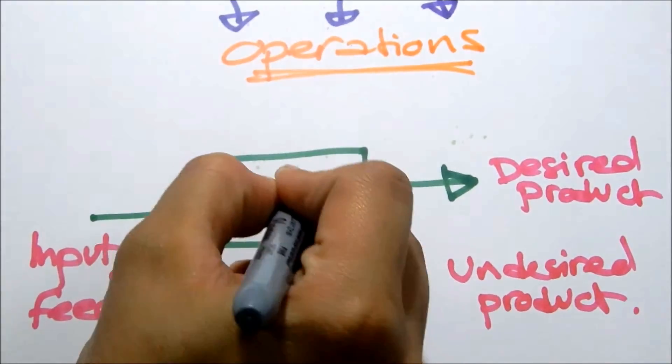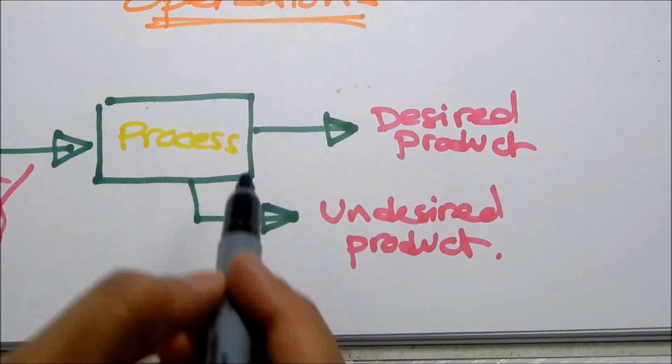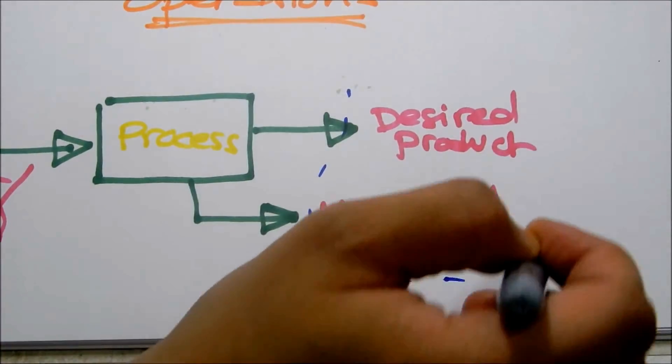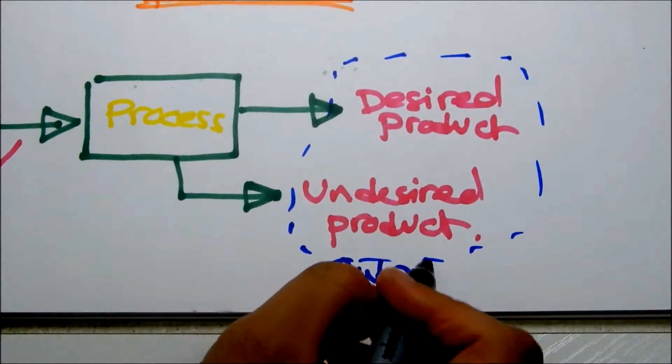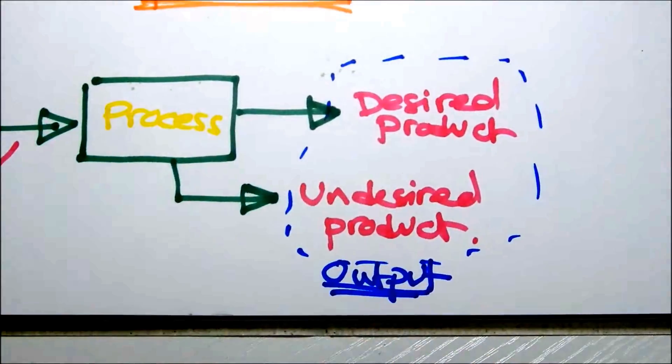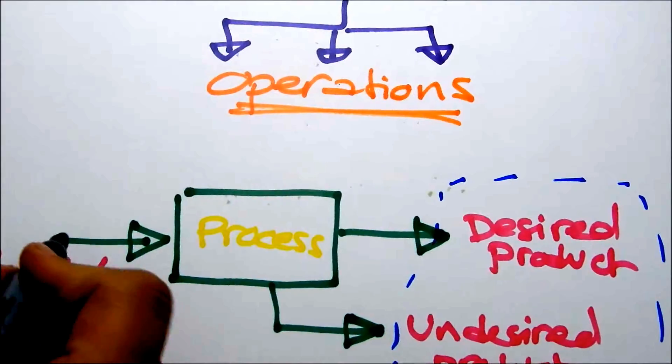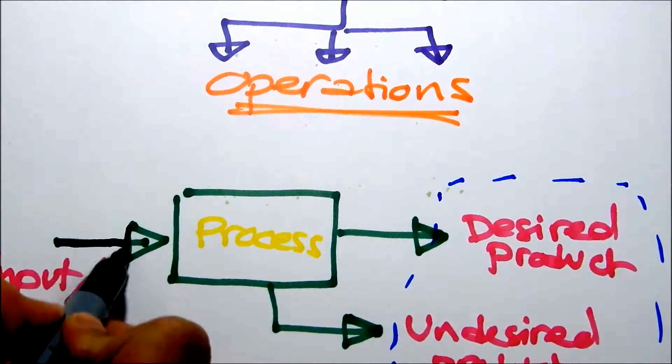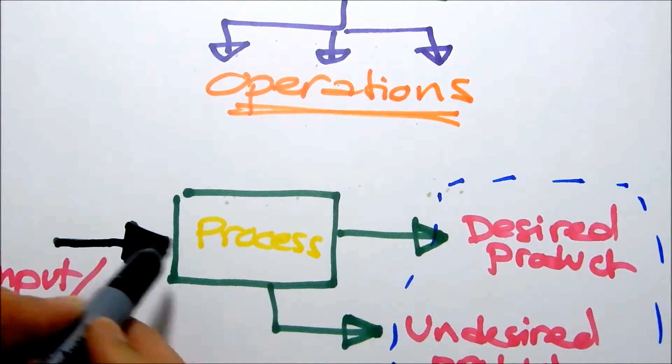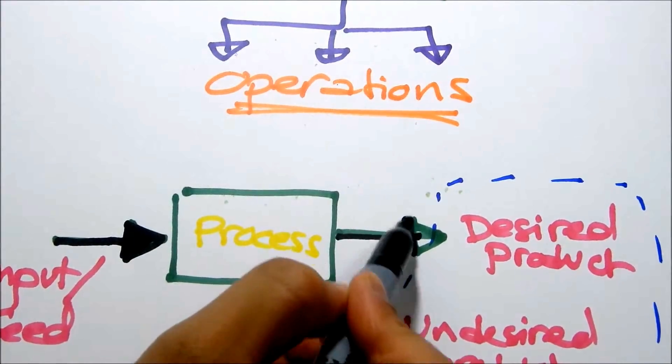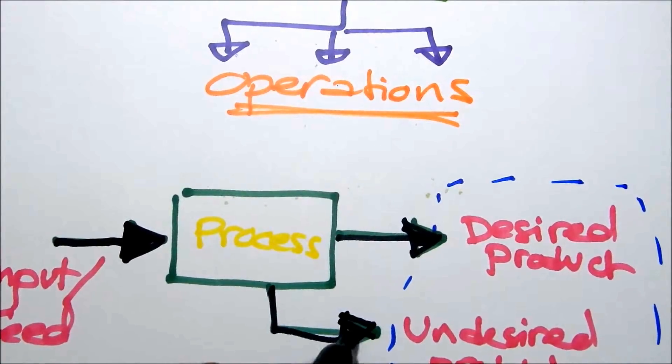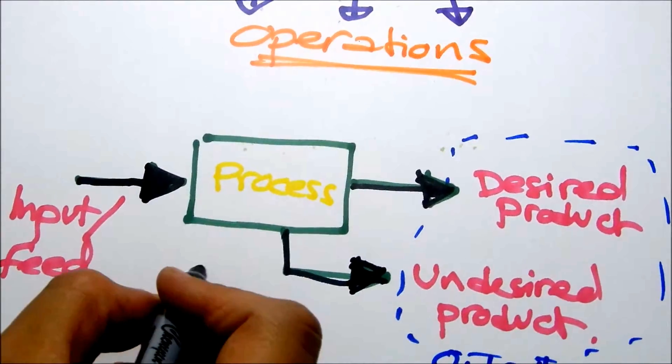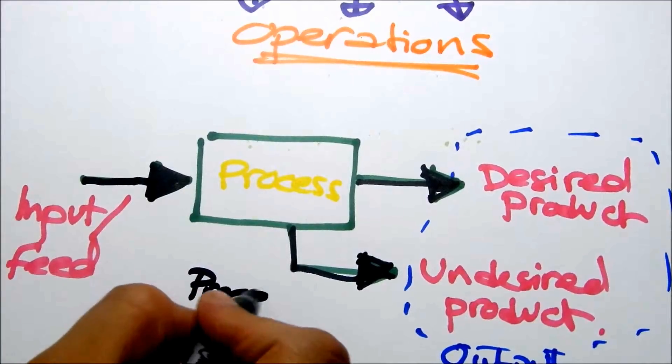And the box that we call people, like we said, is a process. Whatever is going out is called an output. A stream, anything going in, going out, is called a process stream. This is just to get familiar with the terms that we're going to be using throughout. So, this is a process stream.